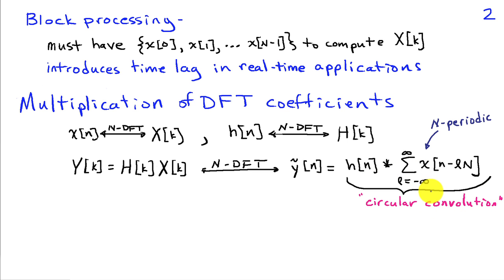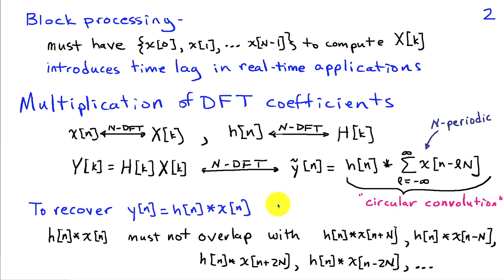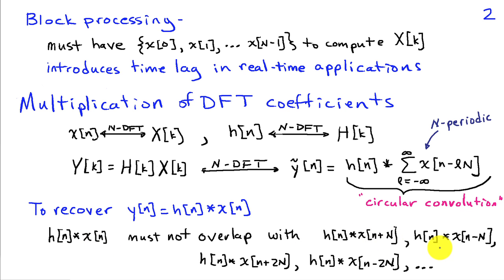In fact, the name given to this operation is circular convolution, because it's as if we did a periodic extension of x of n — wrapped x of n around a circle — and then did the convolution with h of n. So in order to recover the original linear convolution h convolved with x from this product of DFT coefficients, we require that the l=0 term, h of n convolved with x of n, must not overlap with any of the shifted terms like h of n convolved with x of n plus N or x of n minus N.